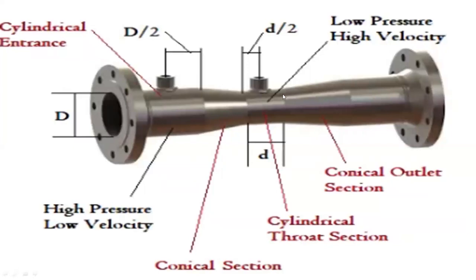There are two tappings on the venturimeter for pressure measurement. The upstream pressure tapping is located at a distance of one-half of the diameter upstream of the convergent entry, while the downstream pressure tapping is located in the throat, as we are seeing in this figure. The cylindrical entrance section for the venturimeter entrance is a straight cylindrical section with a length of five to eight times the pipe diameter.